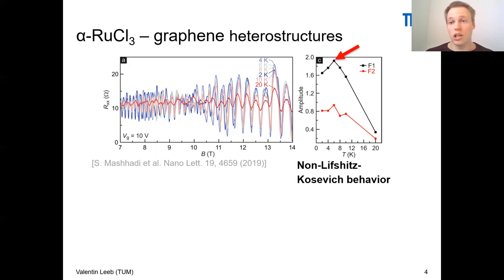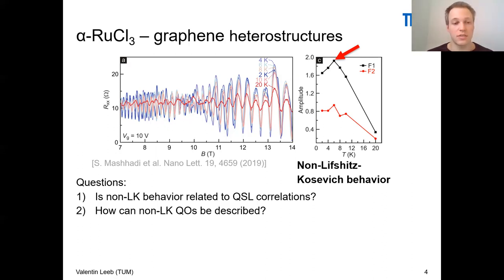This is a clear indicator that something beyond Lifshitz-Kosovich is going on here. With this discovery, two main questions have arisen. First of all, is this non-LK behavior related to the quantum spin liquid behavior of the alpha-ruthenium trichloride layer? And how can we describe these non-LK quantum oscillations in this material? And the hope is that these two questions are related to each other, and if you answer one of these questions, also the other one will be answered.